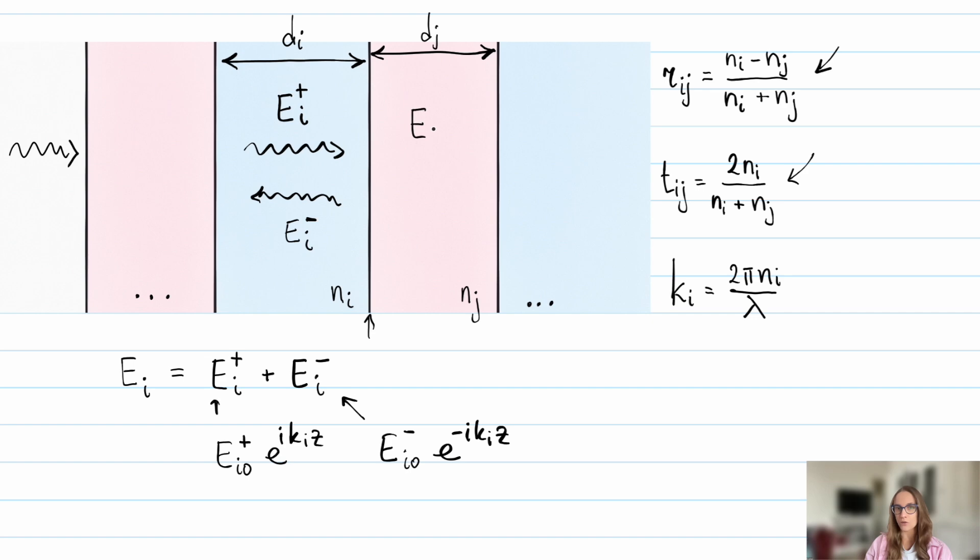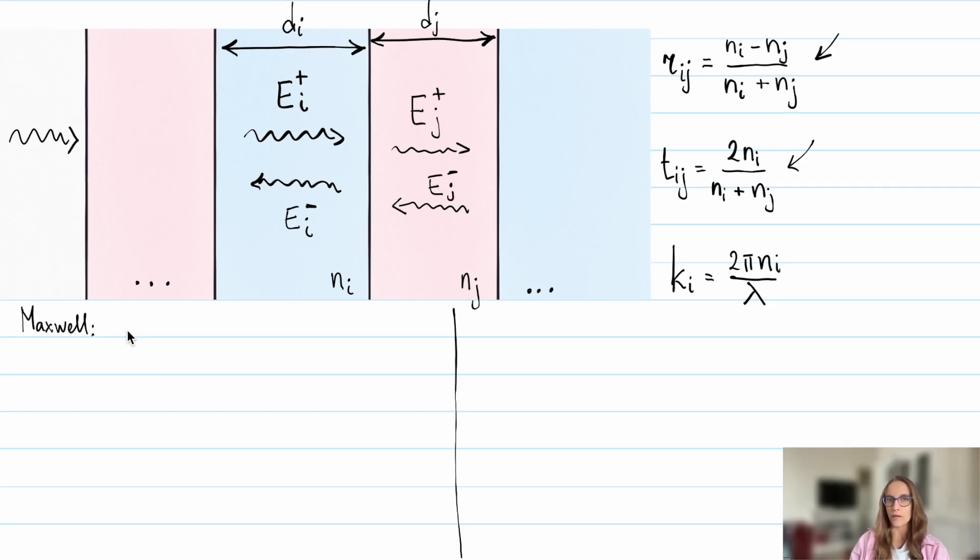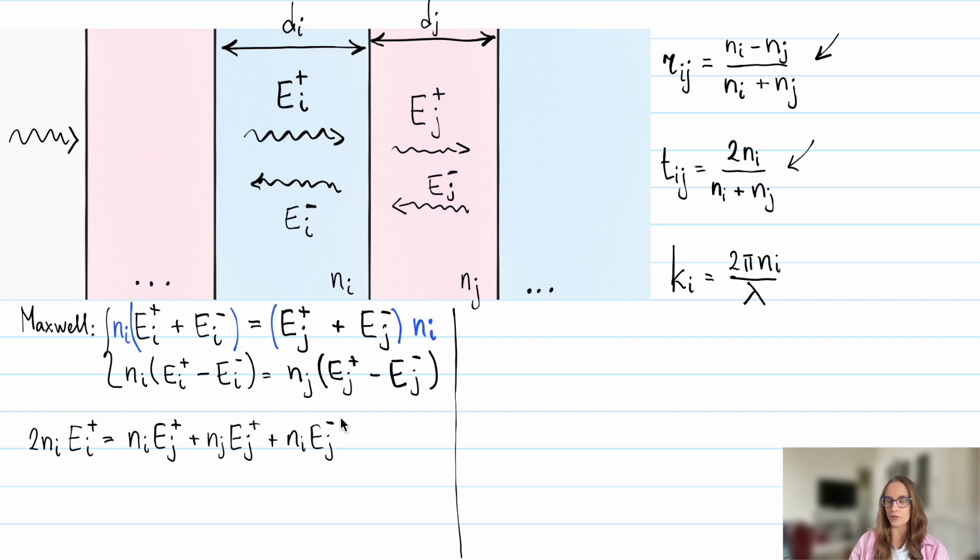Our goal is to relate the fields before the boundary to the fields after it. There are two ways to do that. On one hand, we can apply Maxwell's boundary conditions. The sum of the fields on one side must equal to the sum on the other. From the conditions for the magnetic field, we get an additional equation.